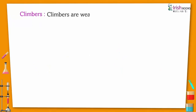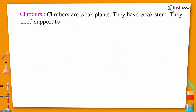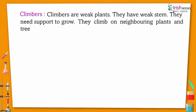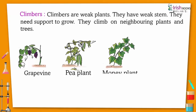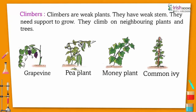Climbers are weak plants. They have weak stems. They need support to grow. They climb on neighboring plants and trees. Like grapevine, pea plant, money plant, common ivy.